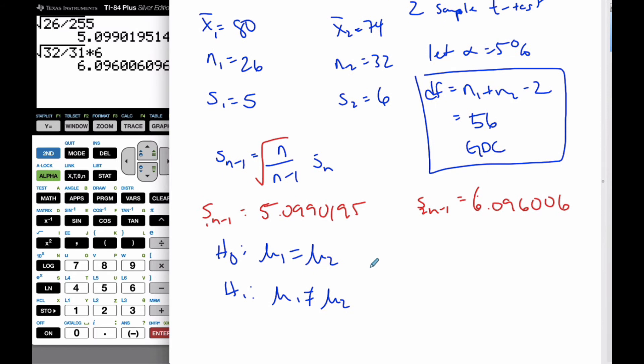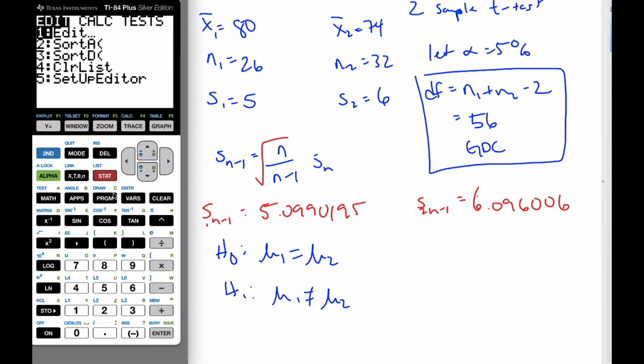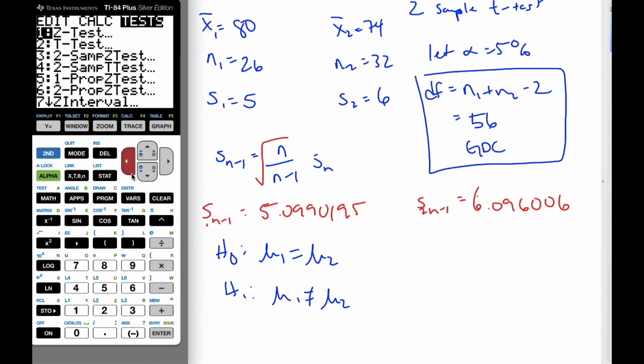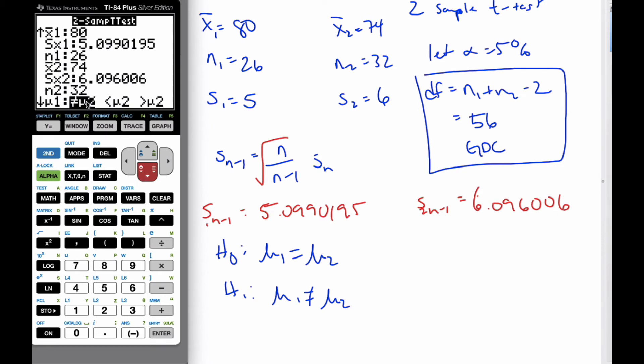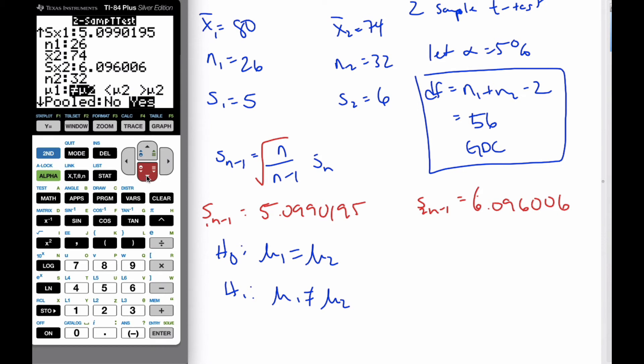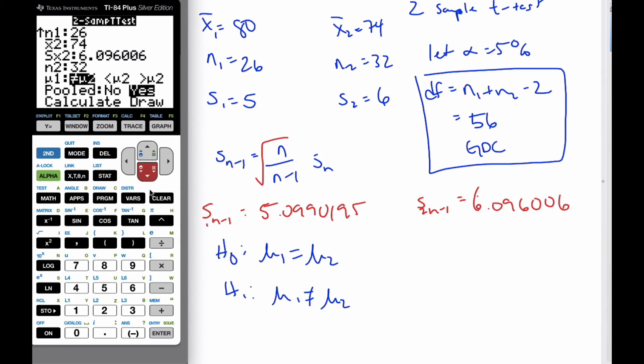So I just go to my calculator now. I go stat, I'm going to go to my tests, and I'm going to do a two-sample t-test, number 4. I'm going to put statistics in there. I've already put the numbers in, I've got my standard deviation, I put them all in. Here I make sure I do it's not equal to, and it's pooled. And I'm going to calculate.